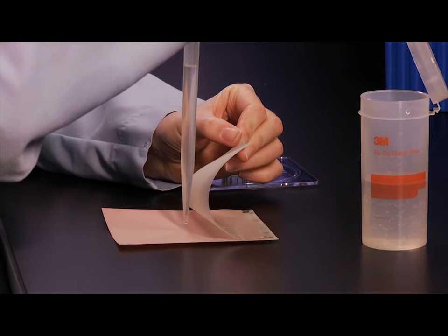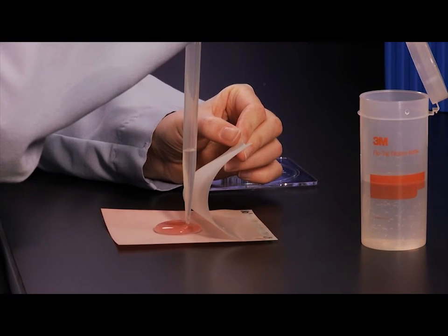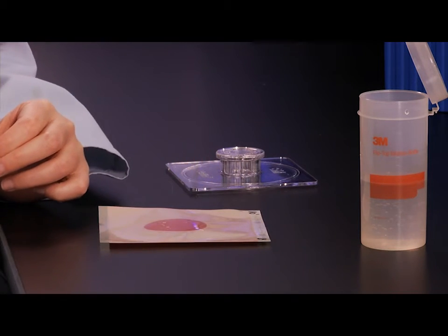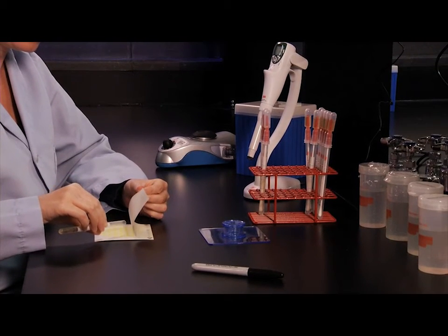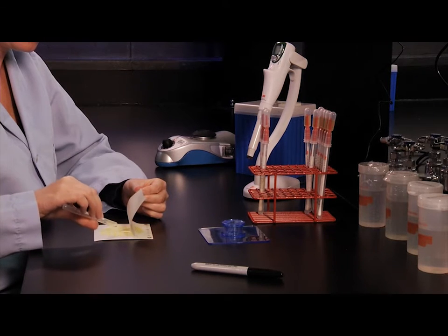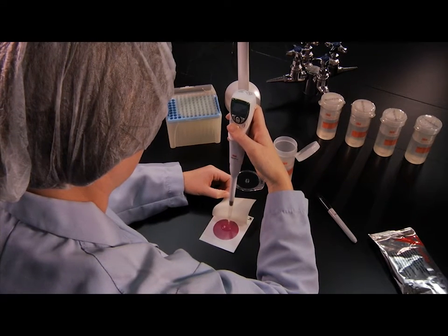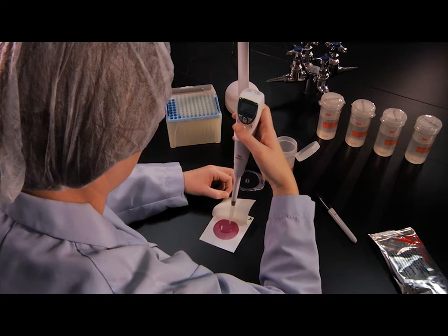A sample volume of 5 milliliters is required to inoculate the 3M Petrifilm high sensitivity coliform count plate, and a sample volume of 3 milliliters is required for the 3M Petrifilm environmental listeria plate. All other 3M Petrifilm plates require a 1 milliliter sample for inoculation.